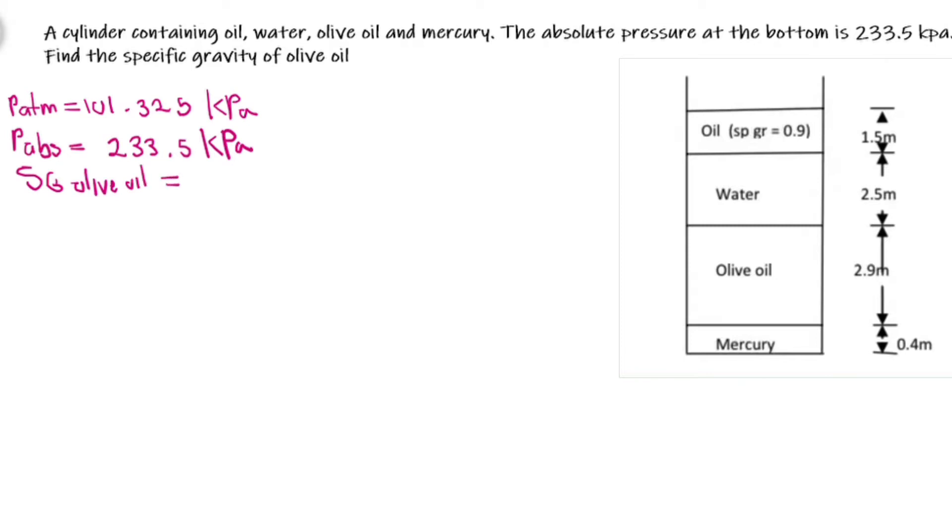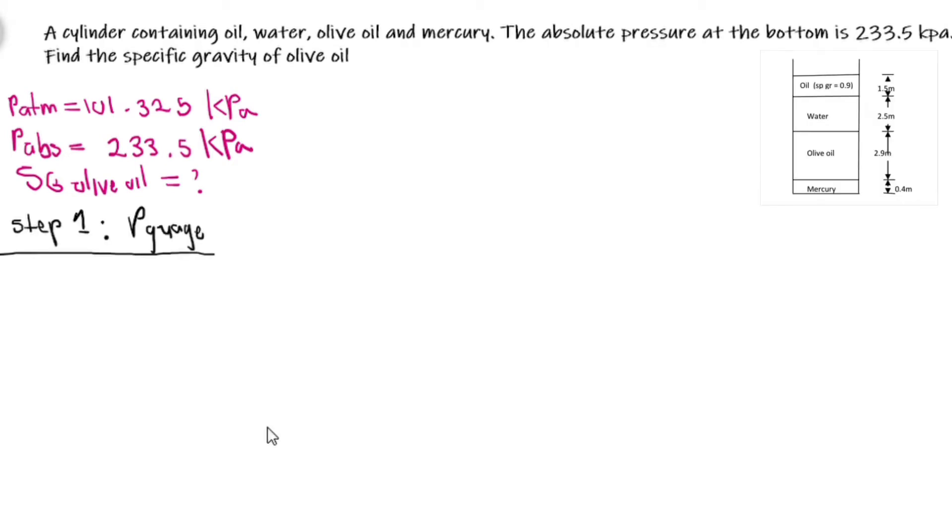The first thing that we are going to do is find the gauge pressure of different products at their interface. So we'll find that of water, oil, and mercury. Let's start with water. We know that gauge pressure is defined to be density times gravitational acceleration times height. We can further derive this and express this as: density can be expressed as specific gravity of a chemical product times the density of water at its reference point, 4 degrees.